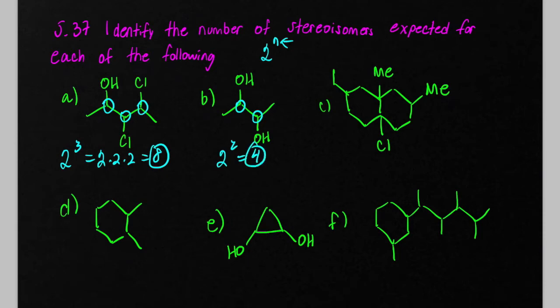In this molecule here, we've got 1, 2, 3, 4 different stereogenic centers. So 2 to the fourth is going to be equal to 16.